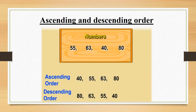What about the descending order? For descending order, you start with the biggest number. So write 80 first, then smaller: 63, then even smaller: 55, and then 40. So the descending order would be 80, 63, 55 and 40.